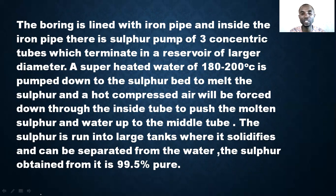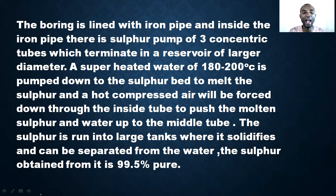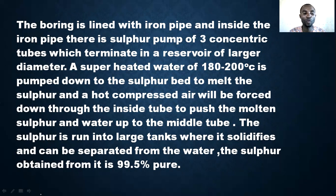Superheated water — heated to about 120 to 200 degrees Celsius — is pumped down to the sulfur bed to melt the sulfur. Hot compressed air is forced down through the inside tube to push the melted sulfur and water up through the middle tube. The sulfur is run into large tanks where it solidifies and separates from the water. The sulfur obtained is about 99.5% pure.